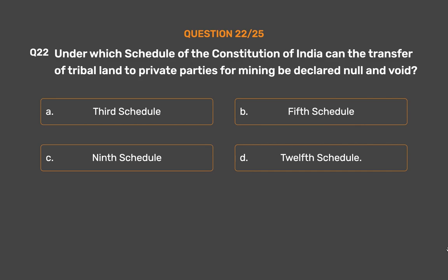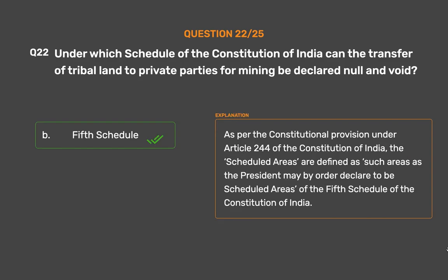The correct answer is Option B: Fifth Schedule. As per the constitutional provision under Article 244 of the Constitution of India, the scheduled areas are defined as such areas as the President may by order declare to be scheduled areas of the Fifth Schedule of the Constitution of India.